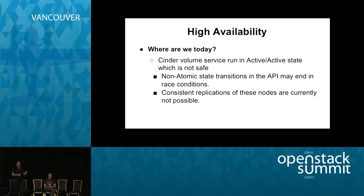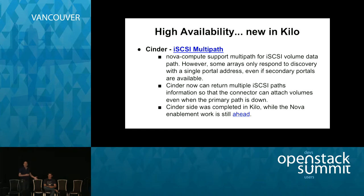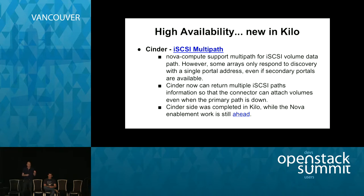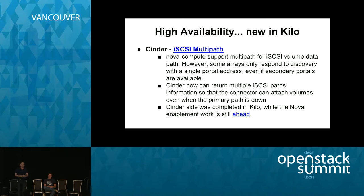If we want to deploy OpenStack in production with block storage, we need to fix these things. In Kilo, iSCSI multipathing was addressed — Nova Compute supports multipathing for iSCSI volume data path. However, some backends only respond to discovery with a single portal address, even if secondary portals are available. Work was done in this cycle to enable the Cinder driver to return multiple iSCSI portal information to overcome this. There's still work to be done on the Nova side — storage is not an island in OpenStack.